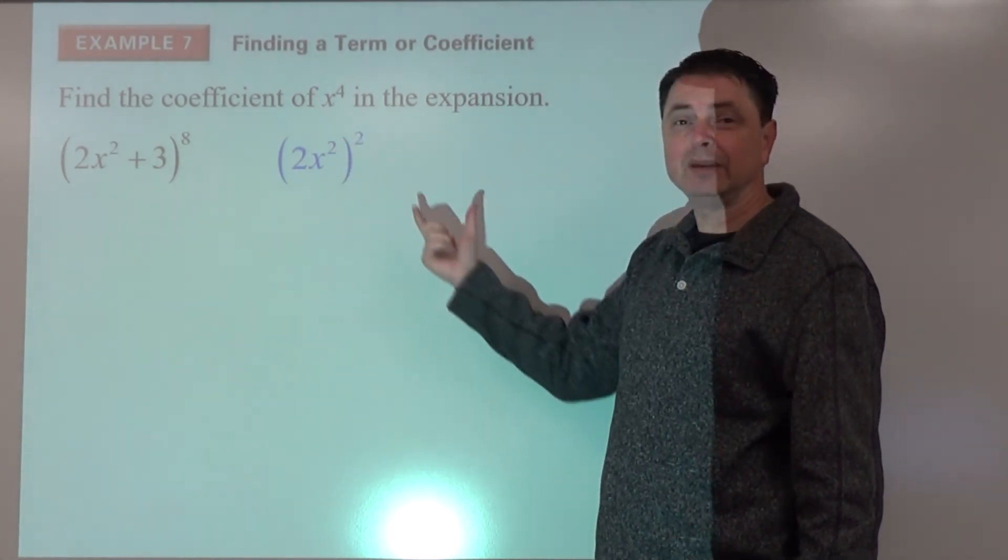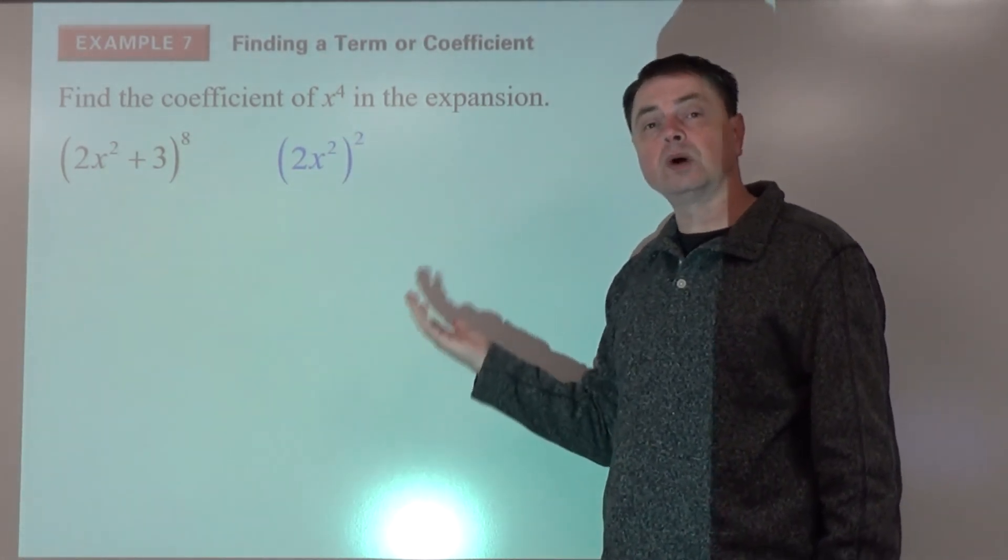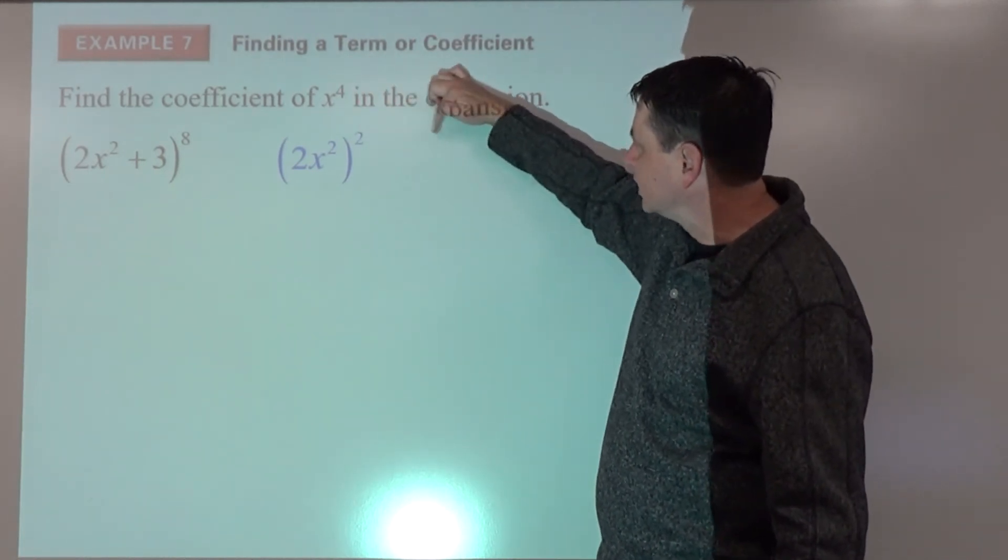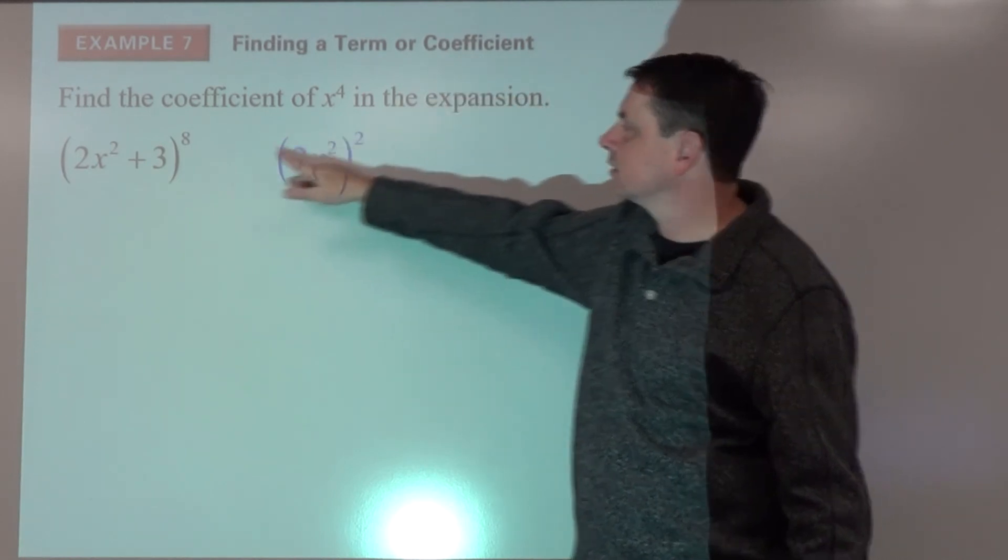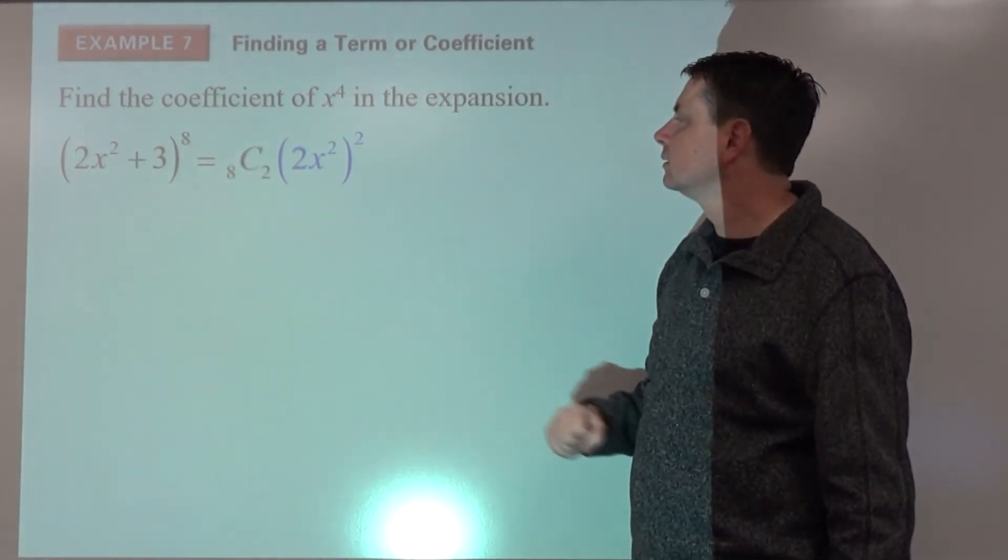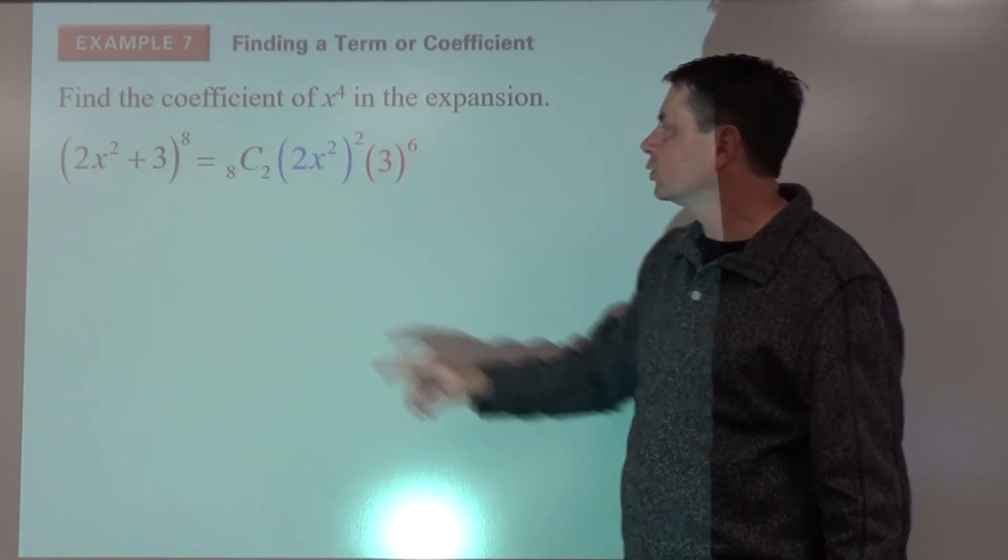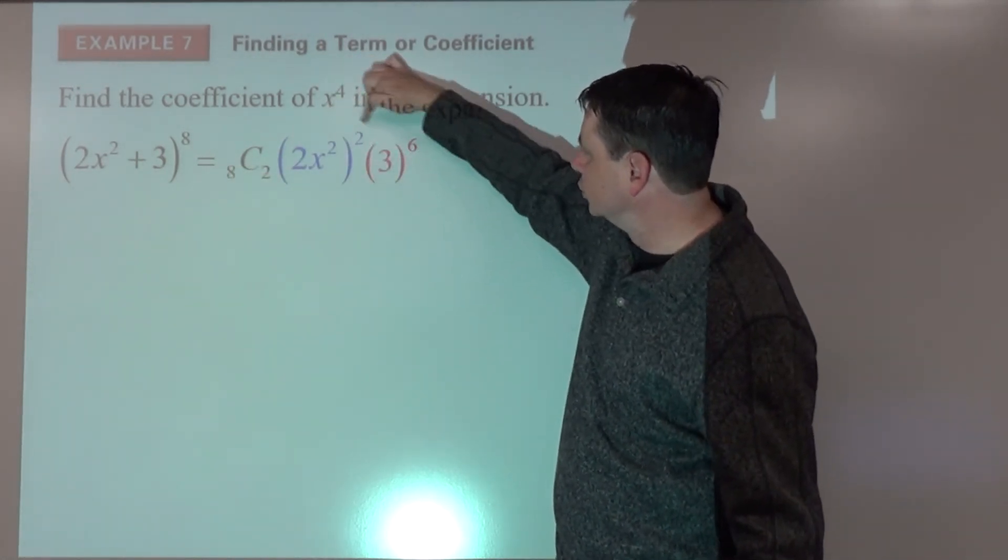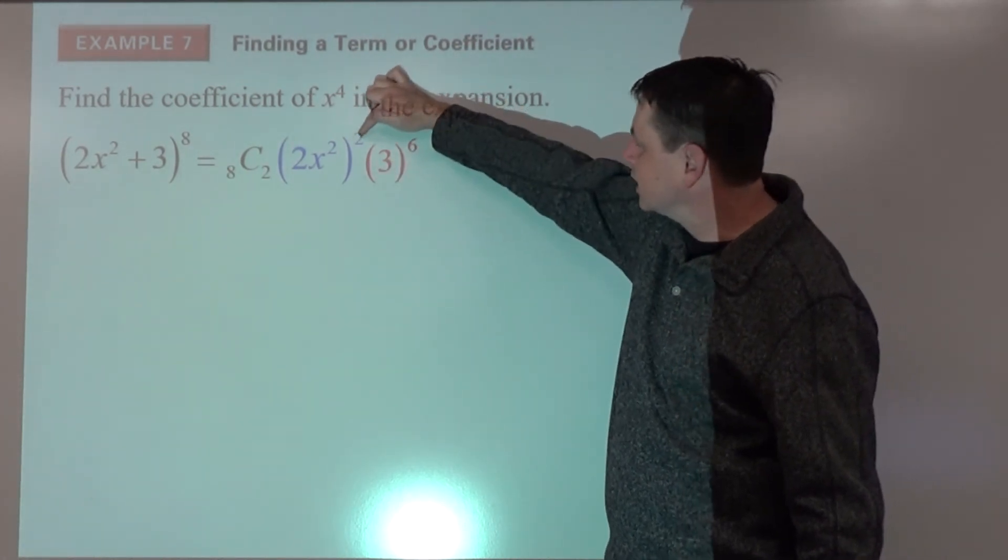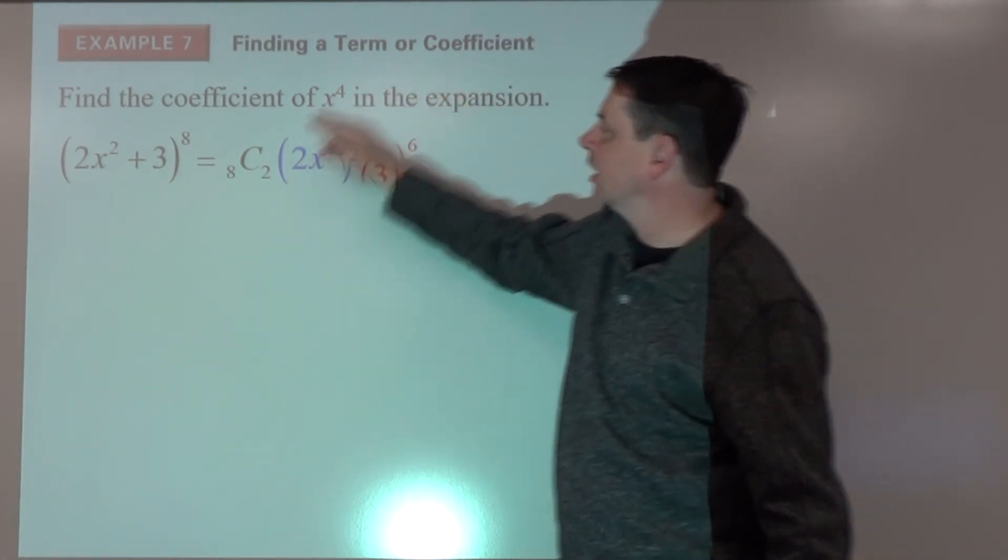That's going to mean b has to be raised to what power? The two exponents here need to add up to the eighth. So we've got 8 choose 2, b gets raised to the sixth, because these two need to add up to the eighth.